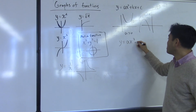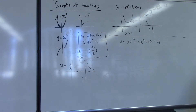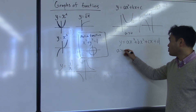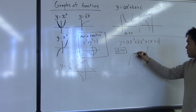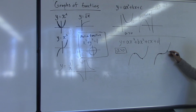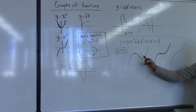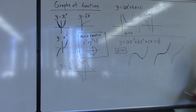For y equal to ax cubed plus bx squared plus cx plus d, because this has more parameters, there are more varieties of shapes. When a is positive, you may have two turning points, or just a single point where it briefly stops increasing and then increases again, or it could just curve without really having a turning point. A turning point is a point where the function changes from increasing to decreasing, or decreasing to increasing.